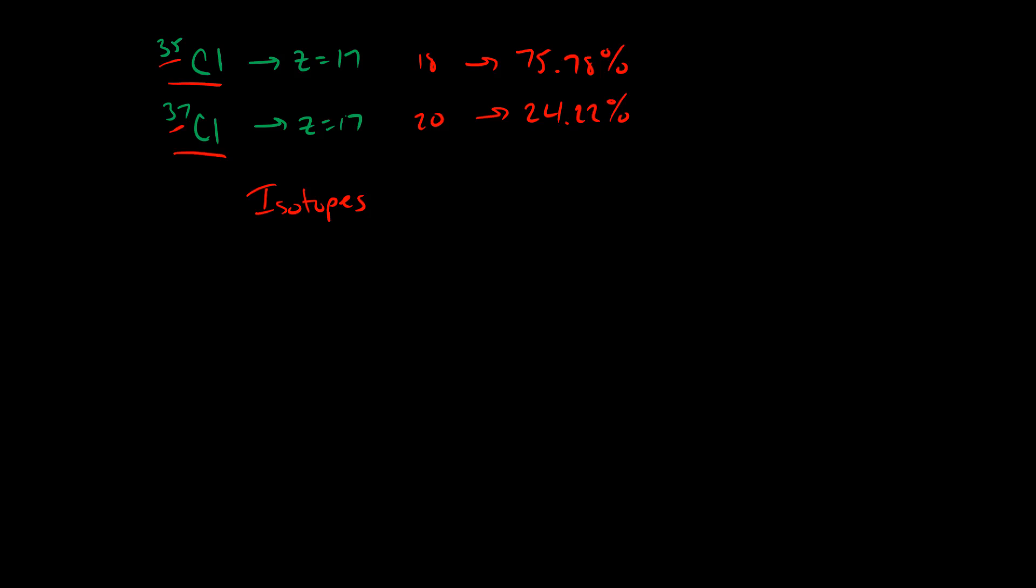This is really important. Because the fact that both of these isotopes are naturally occurring and they both contribute to the mass of chlorine, we need to consider each of these two isotopes when we come up with the actual mass of the atom, the observed mass of a chlorine atom. Since each of these two isotopes have a different number of nuclear particles, we both have 17 protons, but we have either 18 or 20 neutrons.